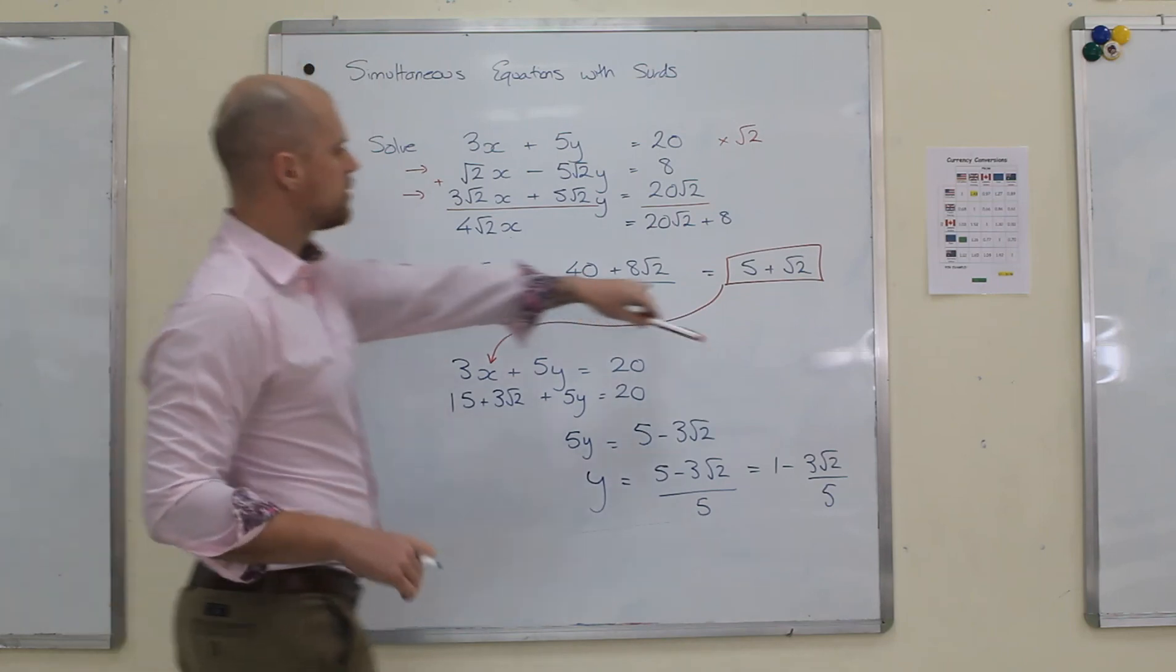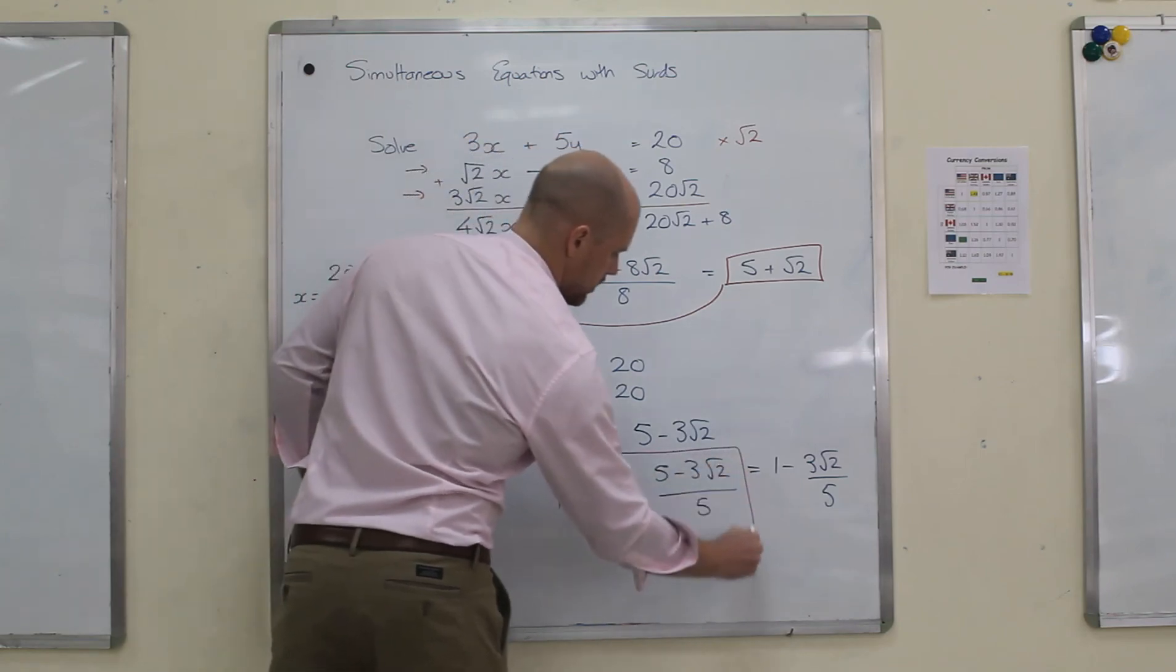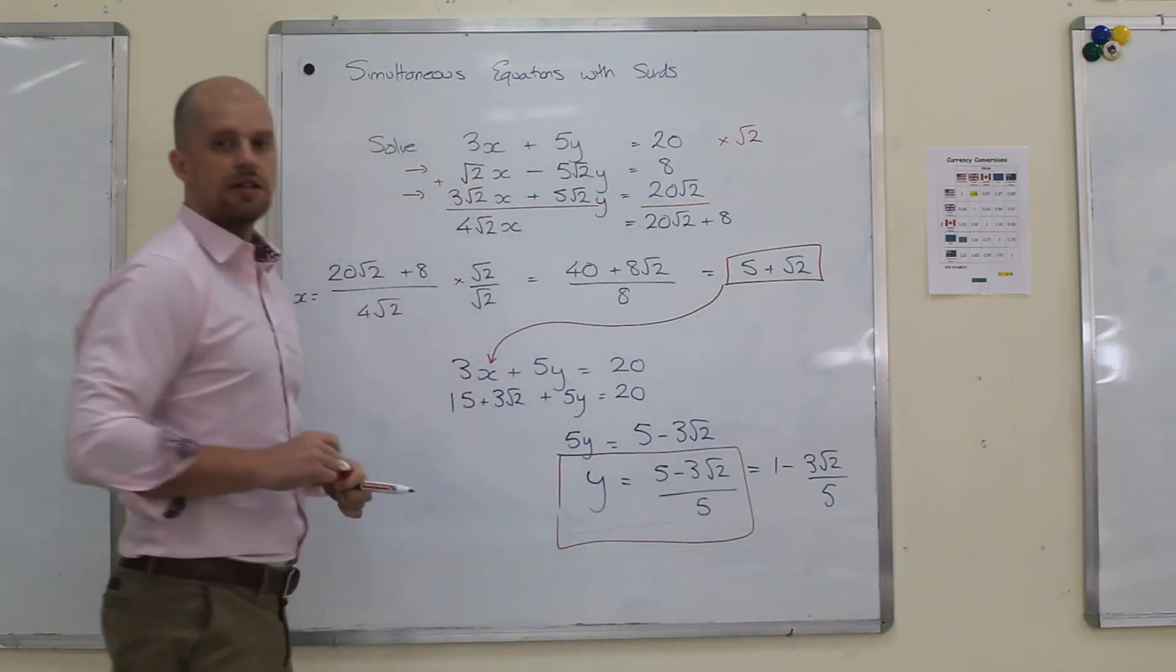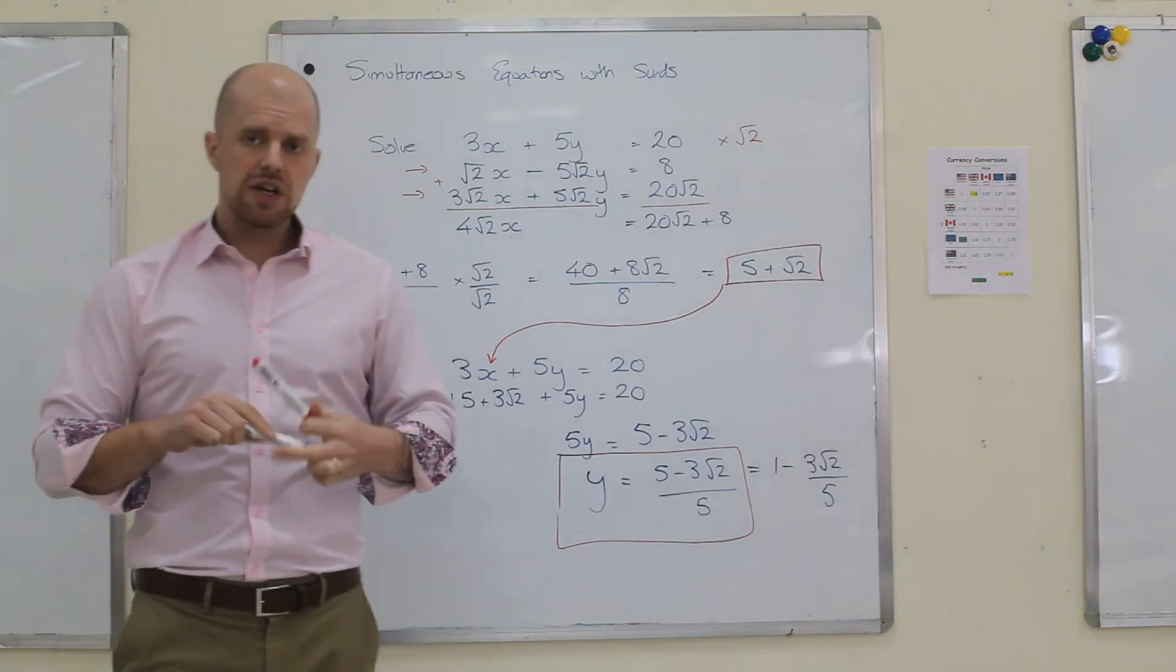This is your x-coordinate. This is your y-coordinate. I'm going to leave it probably like that. It's the nicest way to do it. And that would be how you solve simultaneous equations that have surds in them.